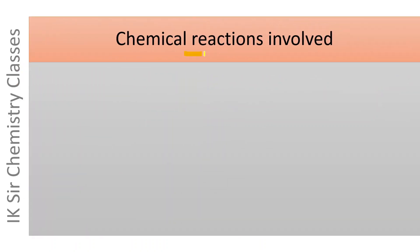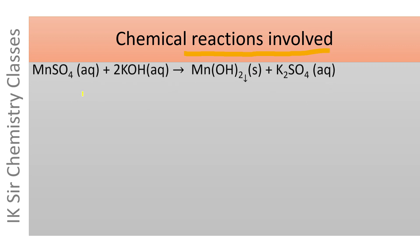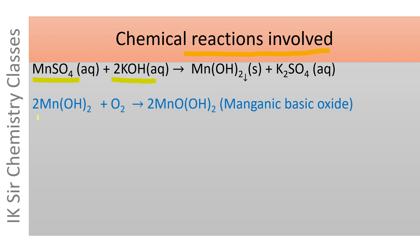The chemical reactions involved in Winkler's method for the determination of dissolved oxygen are as follows. First, manganese sulfate reacts with KOH, forming Mn(OH)₂, which is precipitated as a solid. Then Mn(OH)₂ combines rapidly with dissolved oxygen, forming MnOOH₂, which is basic manganic oxide. The oxidation number of manganese in Mn(OH)₂ is +2, while in MnOOH₂ it is +4.